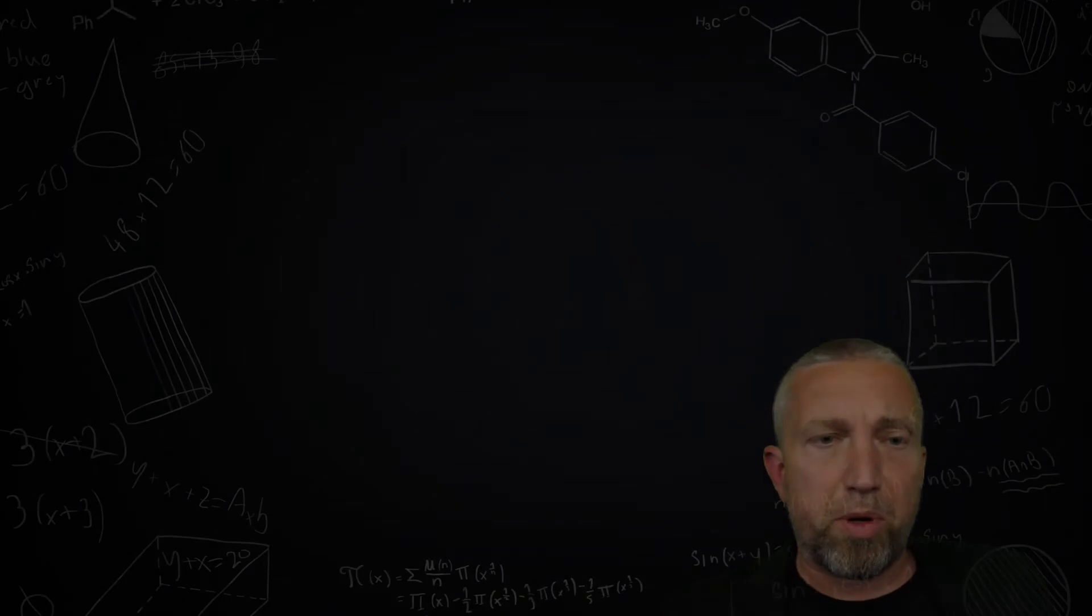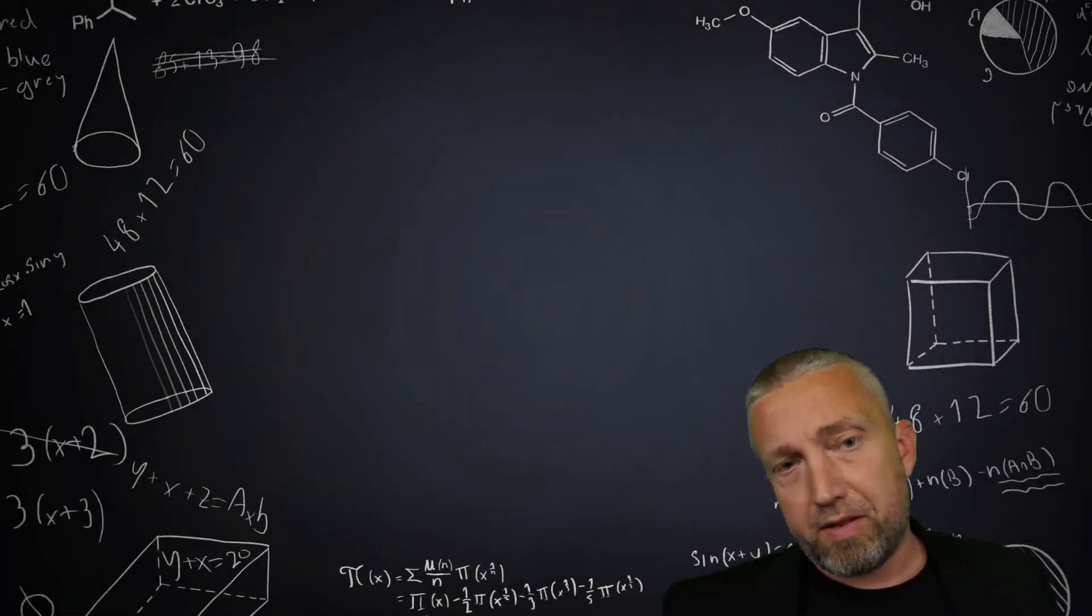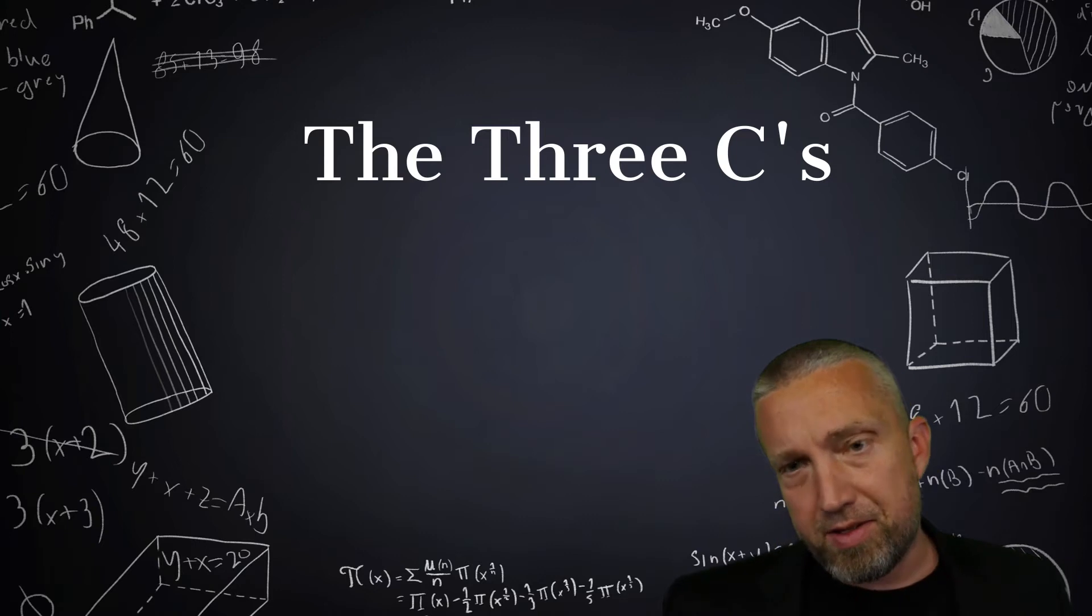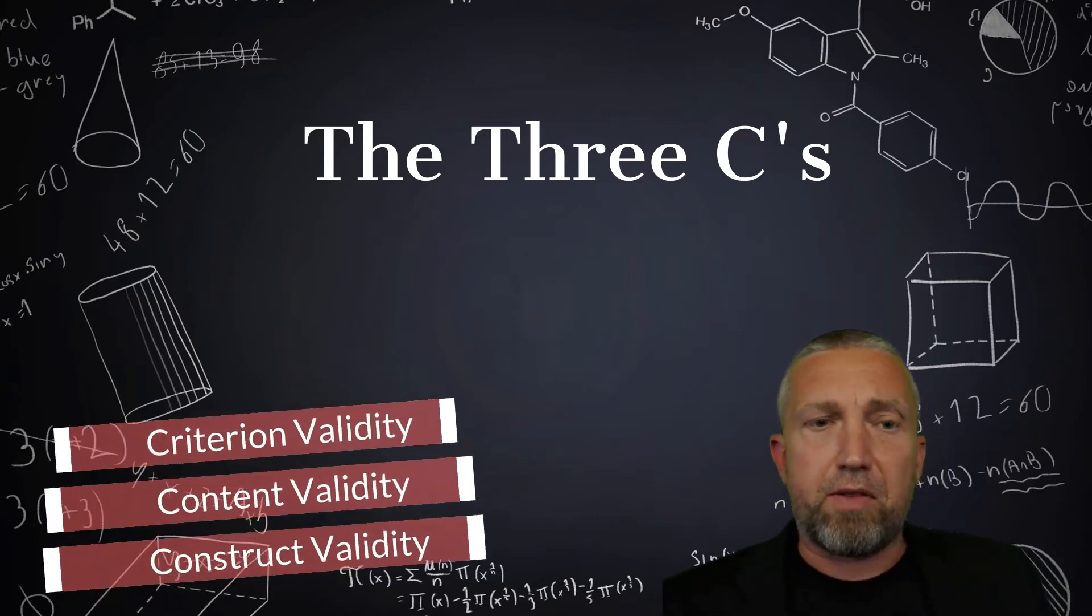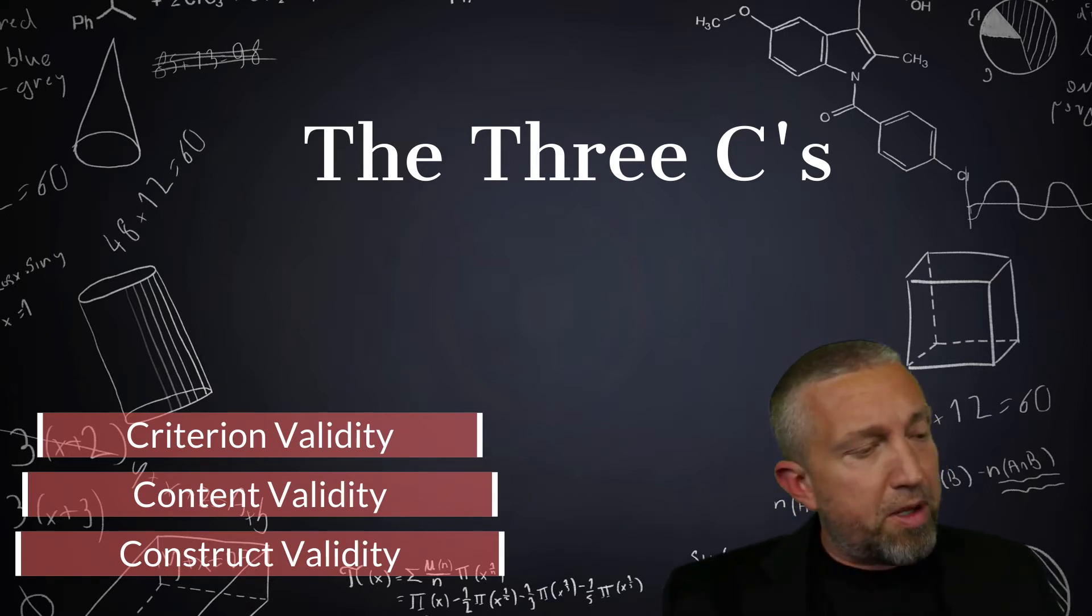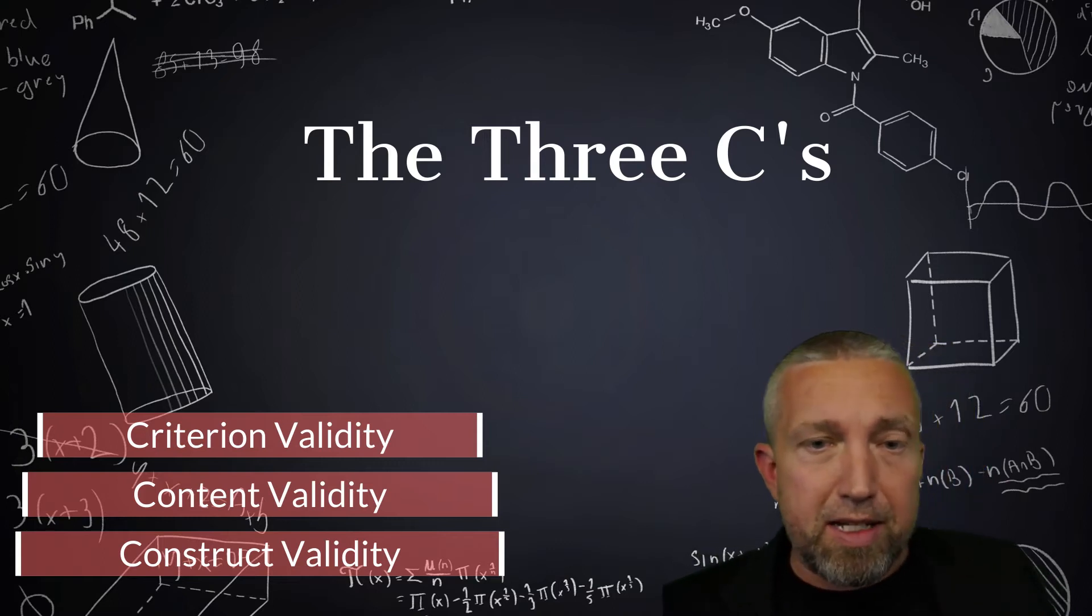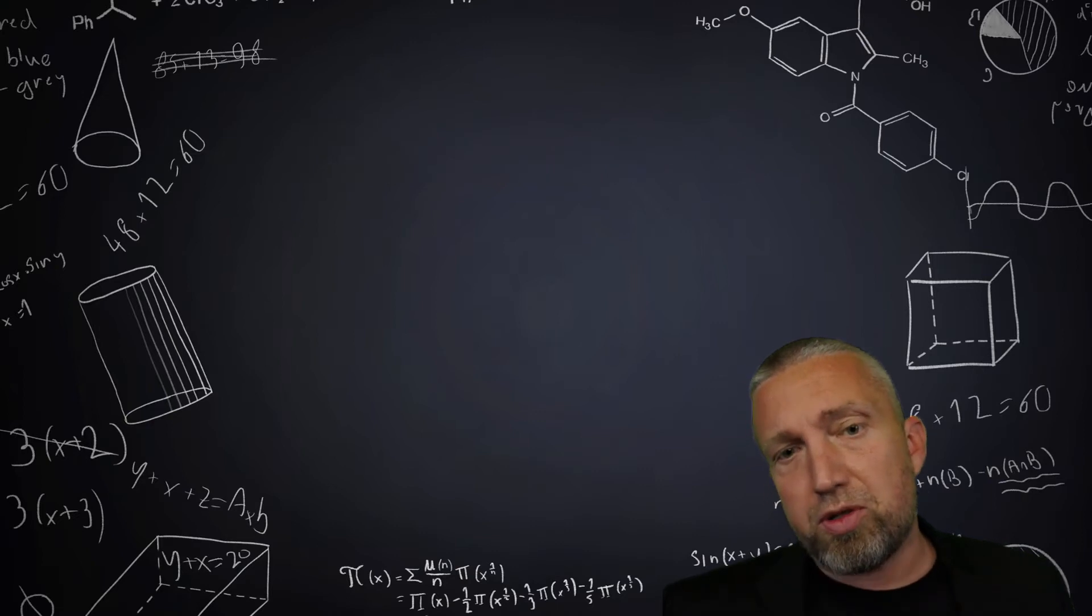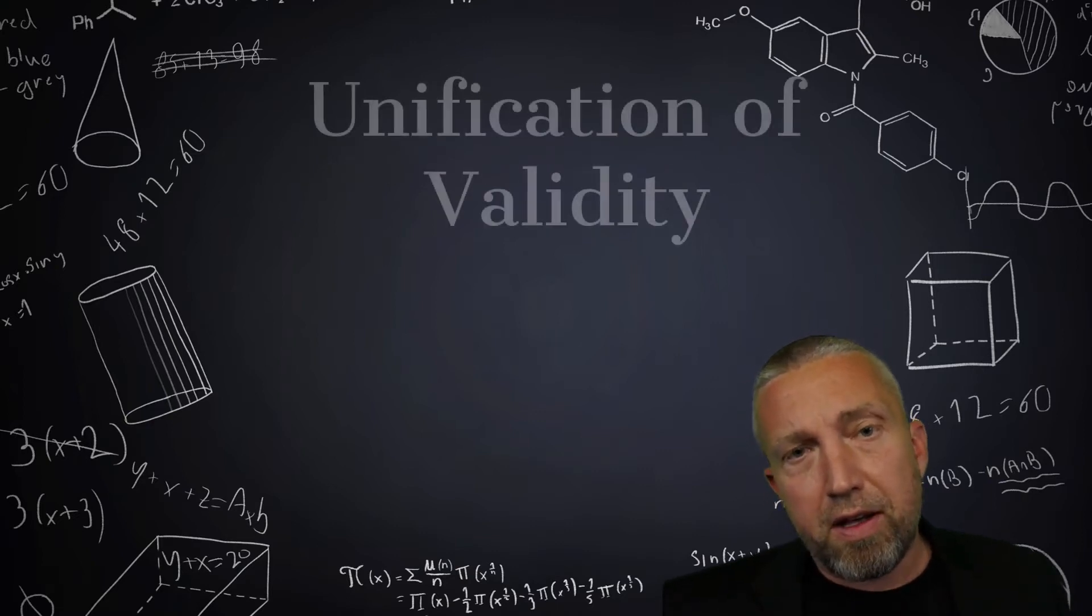The birth of construct validity in 1955, the early 1950s, led to what is referred to as the three C's of validity theory. Validity was said to have three distinct types: criterion, content, and construct. But beginning in roughly the 1970s and throughout the 90s, really mainly in the late 80s and 90s, there was a push to unify validity theory.